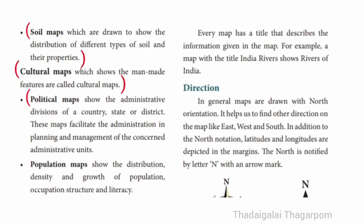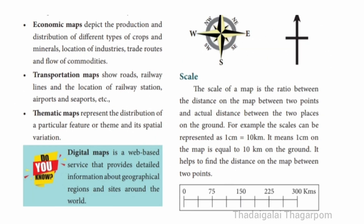Political maps show the administrative divisions of a country, state or district. Population maps show the distribution, density and growth of population. Economic maps depict the production and distribution of different types of crops and minerals, location of industries, trade routes and flow of commodities.